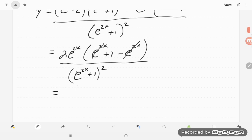And so this is equal to 2e to the 2x over e to the 2x plus 1. Oops. Wait a minute. Forgot my 1 up here.